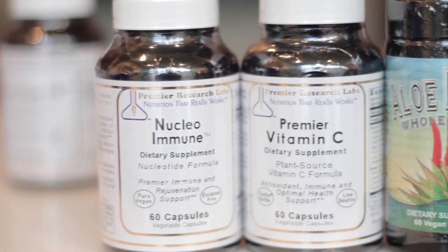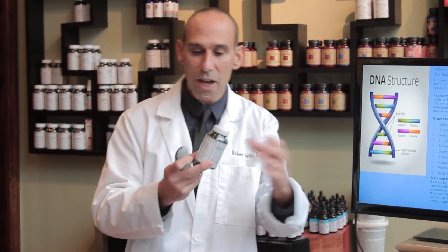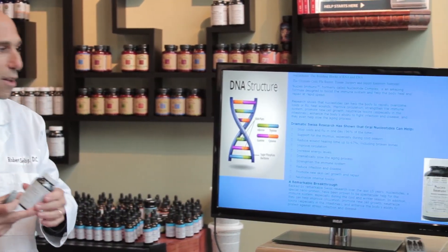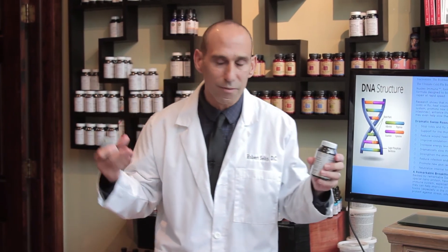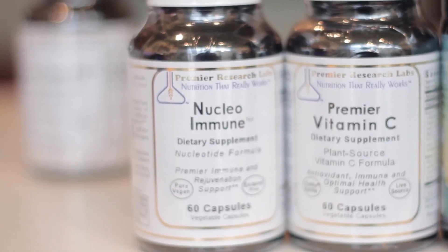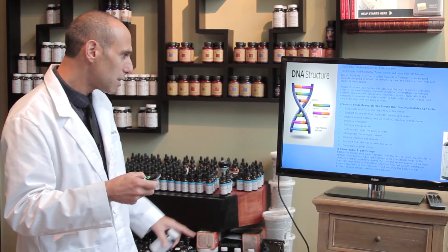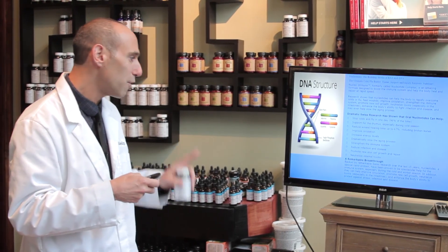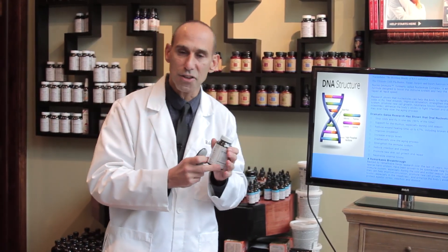One of my all-time favorite products is NucleoImmune. Those are your nucleotides — the adenine, thymine, guanine, and cytosine that make up DNA. When viral particles are invading the cell, that's what they're breaking down. When I feel that first symptom coming on, I take about 10 to 12 capsules the first hour, another 10 to 12 in six hours, and go through a bottle of 60 capsules in two to three days. This is one of the most researched nutrients we have, backed by Swiss research over the last 15 years. Nucleotides as a special nanoprotein have been proven to be spectacular help for the immune system, especially during the cold and winter season.